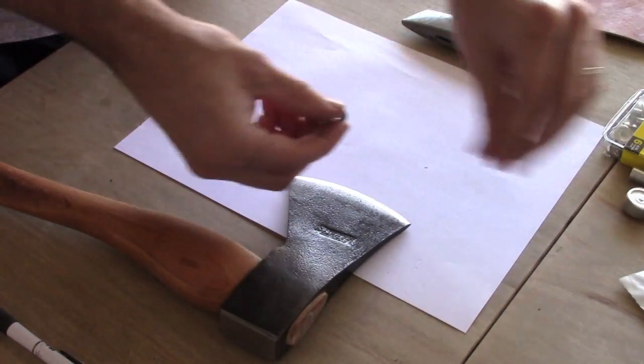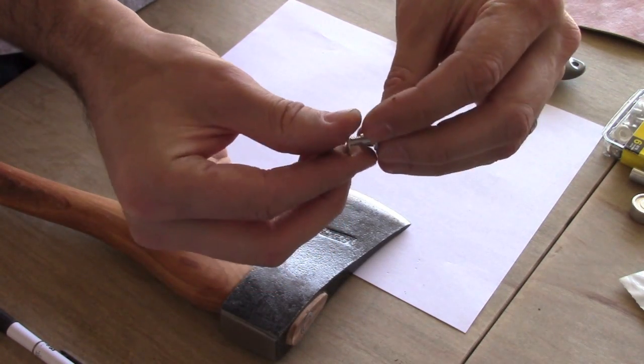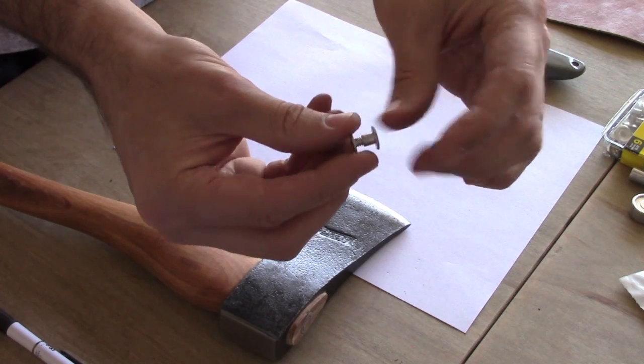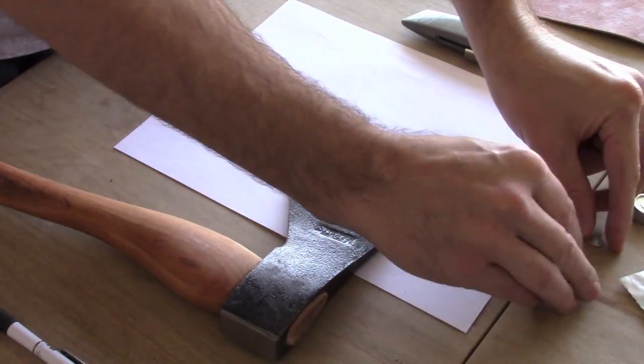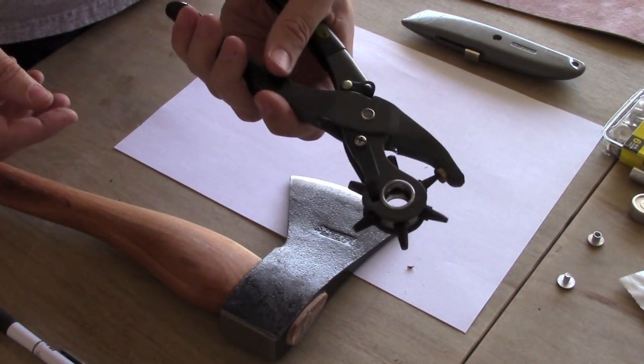We're also going to be using what's called a Chicago screw, if you can see it on the camera there, or it's called a Poston screw, to fasten one side of the sheath. What you're also going to need is a hole punching tool, a leather punching tool.